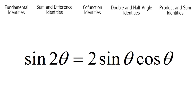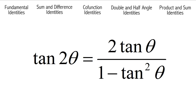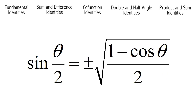Sine of 2 theta is equal to 2 sine theta times cosine theta. Tangent of 2 theta is equal to 2 tangent theta over 1 minus tangent squared theta. Sine of theta over 2 is equal to plus or minus the square root of 1 minus cosine theta over 2.